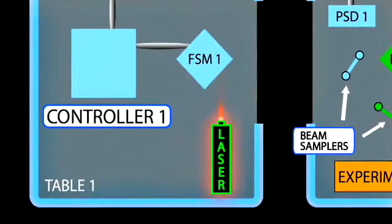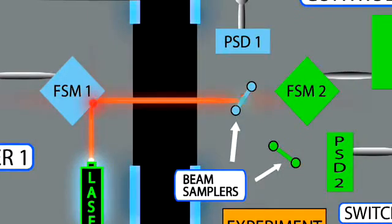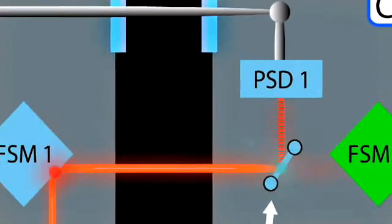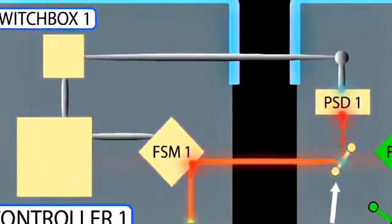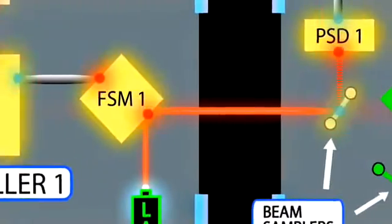Light from the laser is centered onto fast steering mirror number one and reflected to table two. The beam passes through a beam sampler, which reflects a small portion of the light onto a beam position sensing detector. The output signal from this detector is routed back to the controller of fast steering mirror number one.